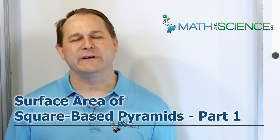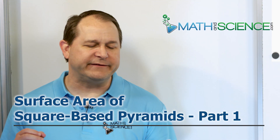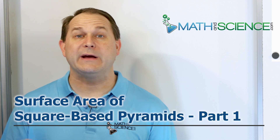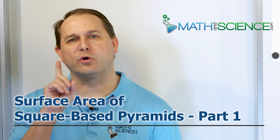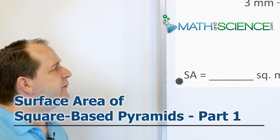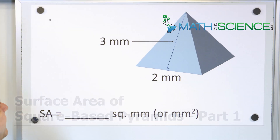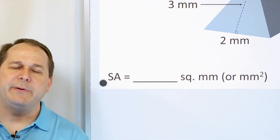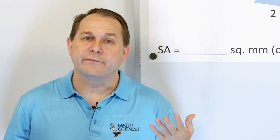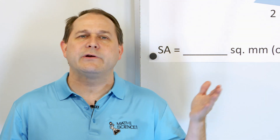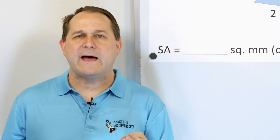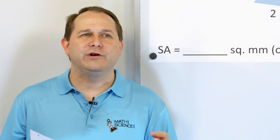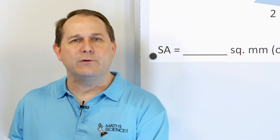Hello, welcome back. The title here is called the surface area of square-based pyramids. This is part one. What we want to do is figure out what the surface area for a pyramid like this would be. We're going to draw a picture and write down the formula that calculates the area. But more than that, I don't want you to just use a formula I give you.